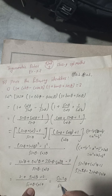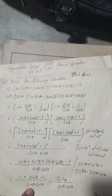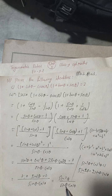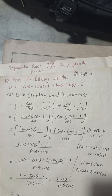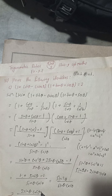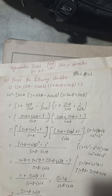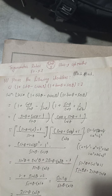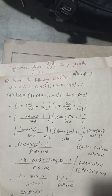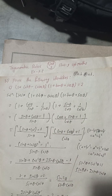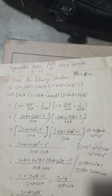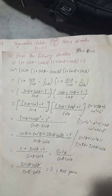To simplify, we rewrite sin 2θ as 2 sin θ cos θ in the numerator. Then sin θ cancels with sin θ, and cos θ cancels with cos θ, leaving us with 2. This equals the RHS, so the identity is proved.